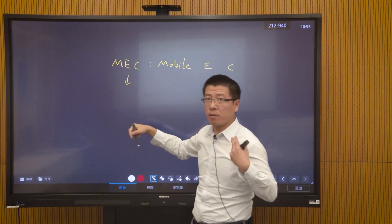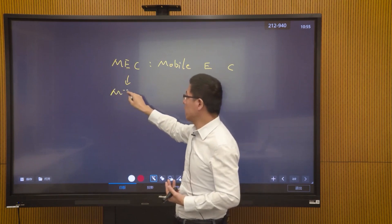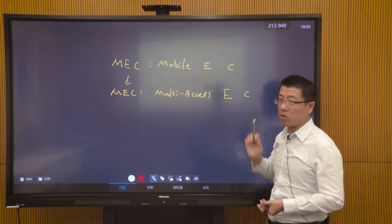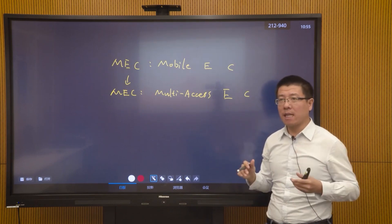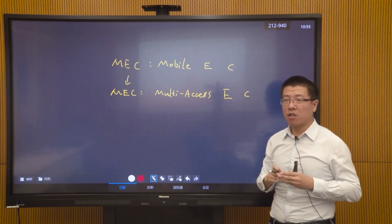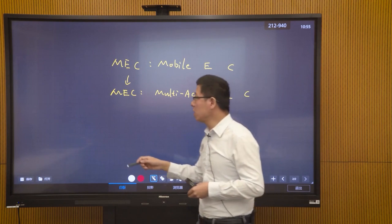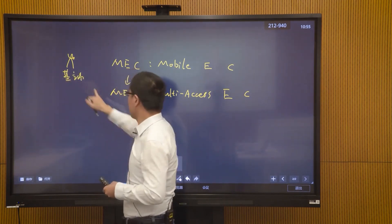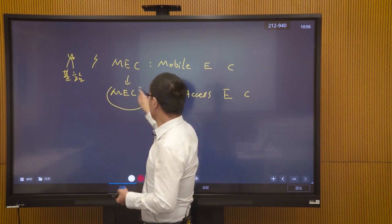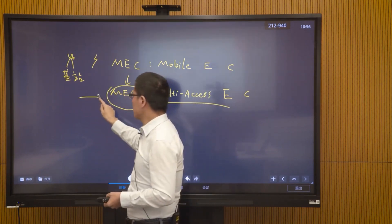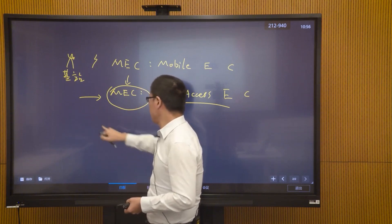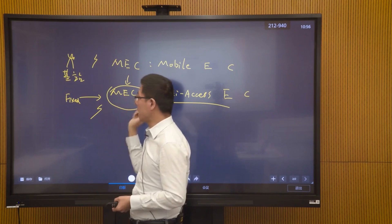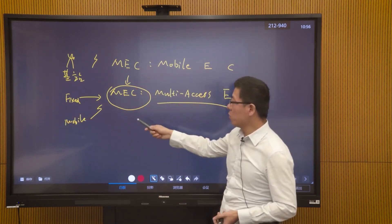MEC was originally called Mobile Edge Computing, but was renamed Multi-Access Edge Computing because in the future the edge data center won't only serve mobile access — fixed wired access will also be supported. This is why we changed the name: we want the edge data center to accommodate both fixed and mobile access methods, supporting new vertical industry applications based on this expanded edge computing capability.